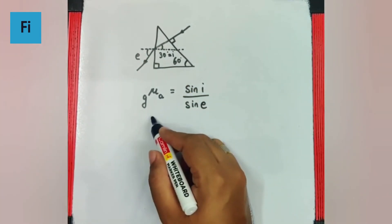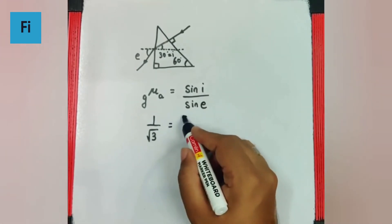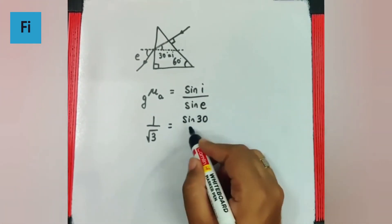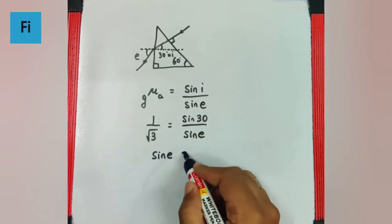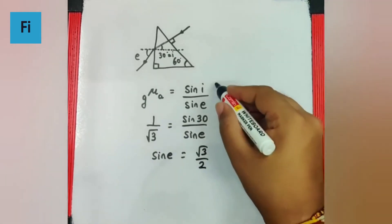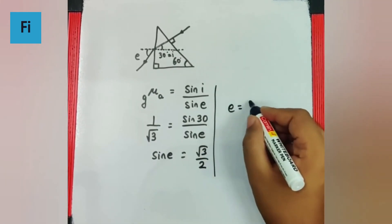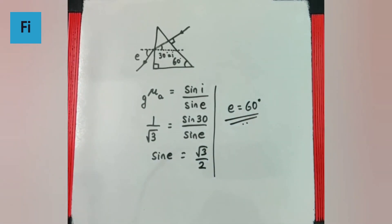So now this is going to be 1 by root 3. This is going to be sine 30 and this is going to be sine e. So sine e will be root 3 by 2. Sine of what is root 3 by 2? We know that is 60 degrees. And this is our final answer.